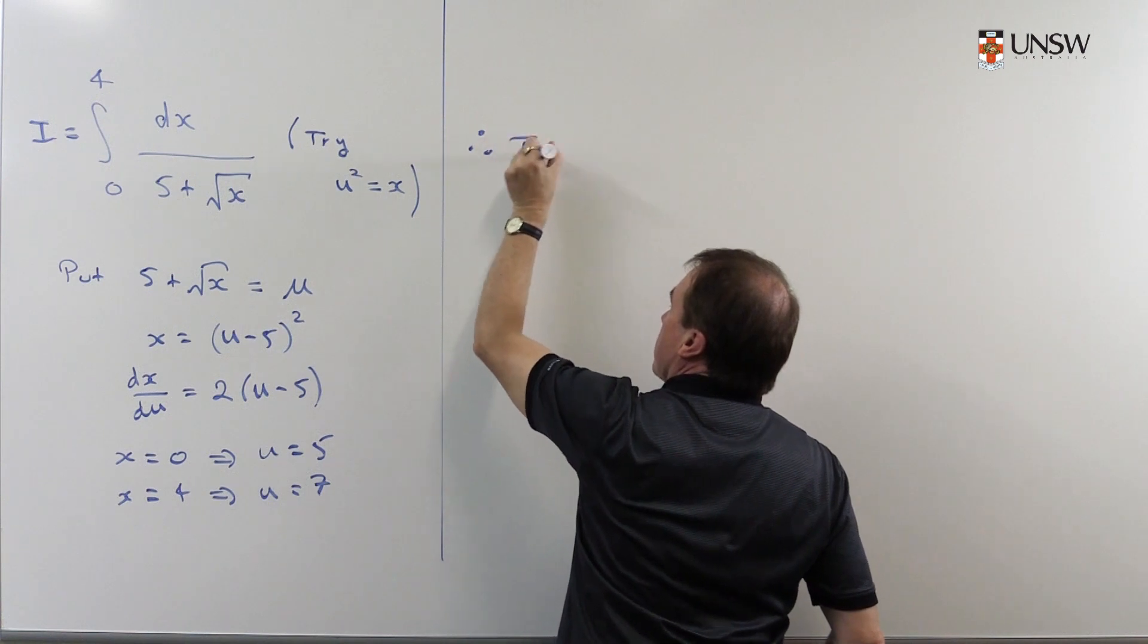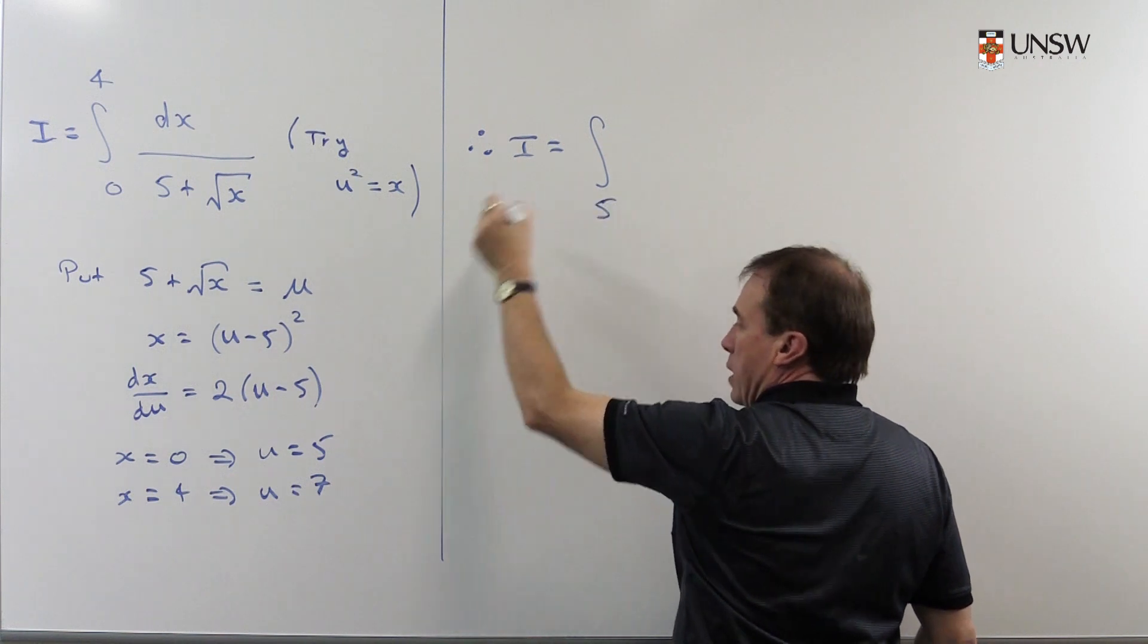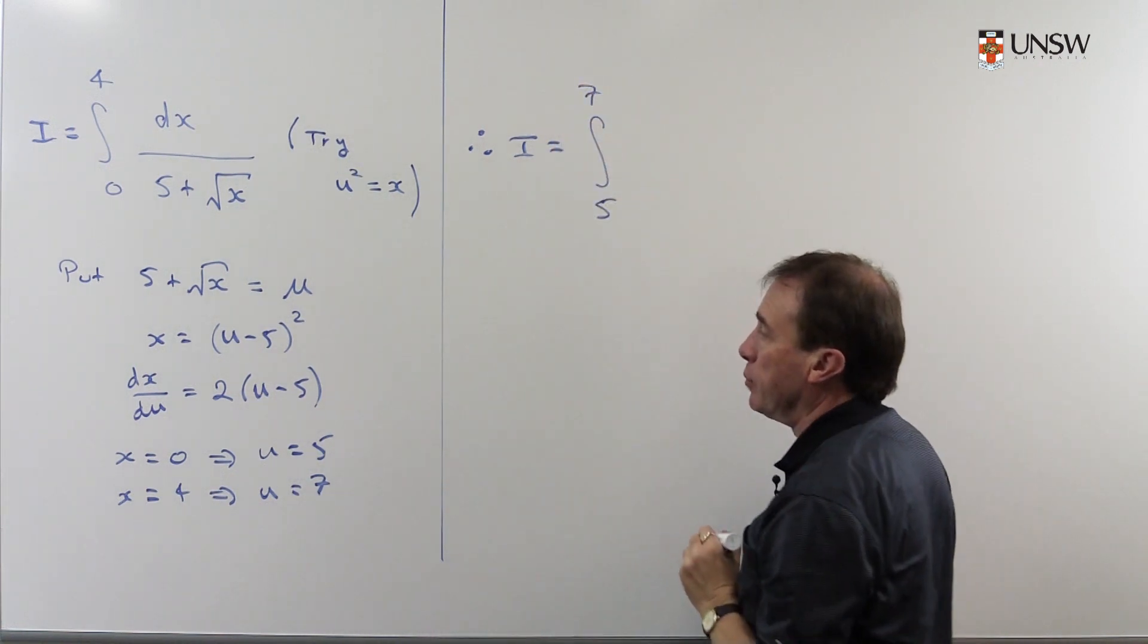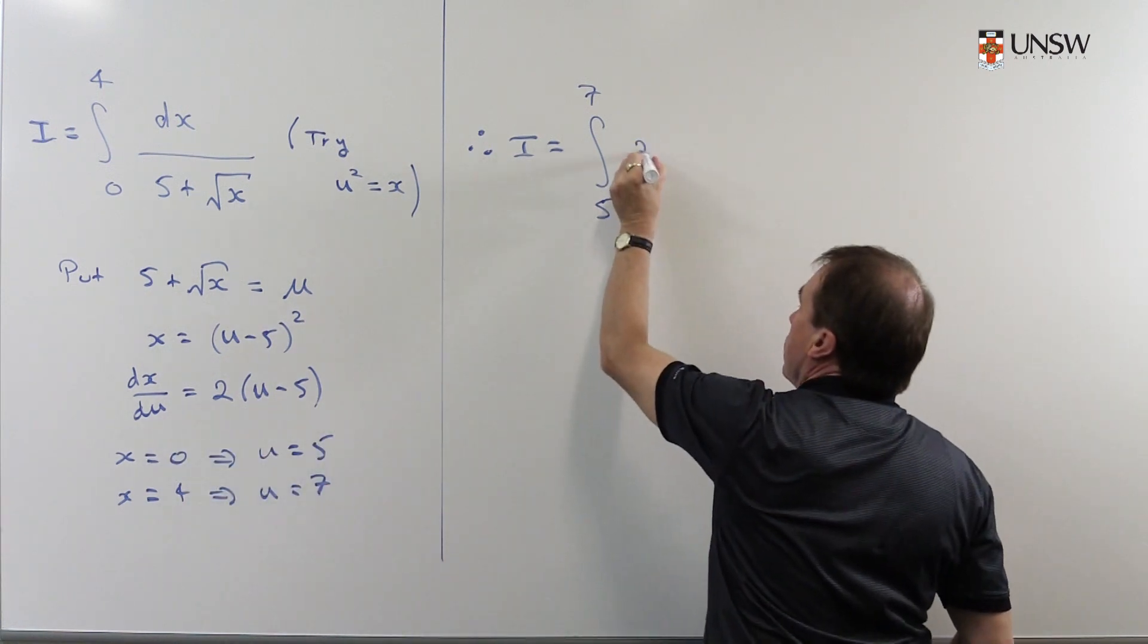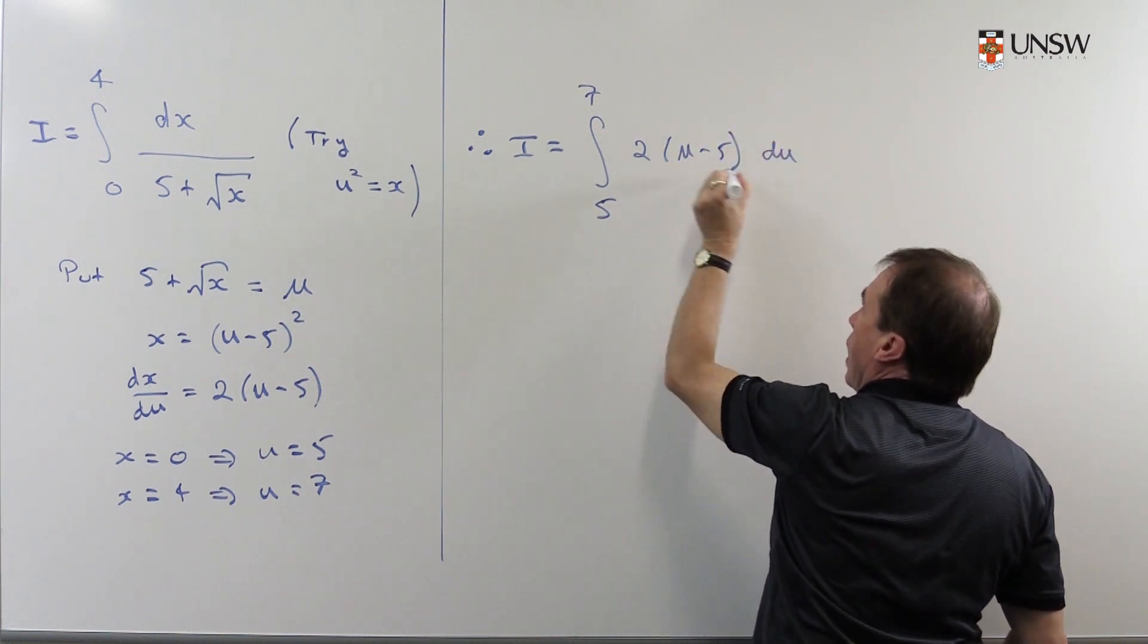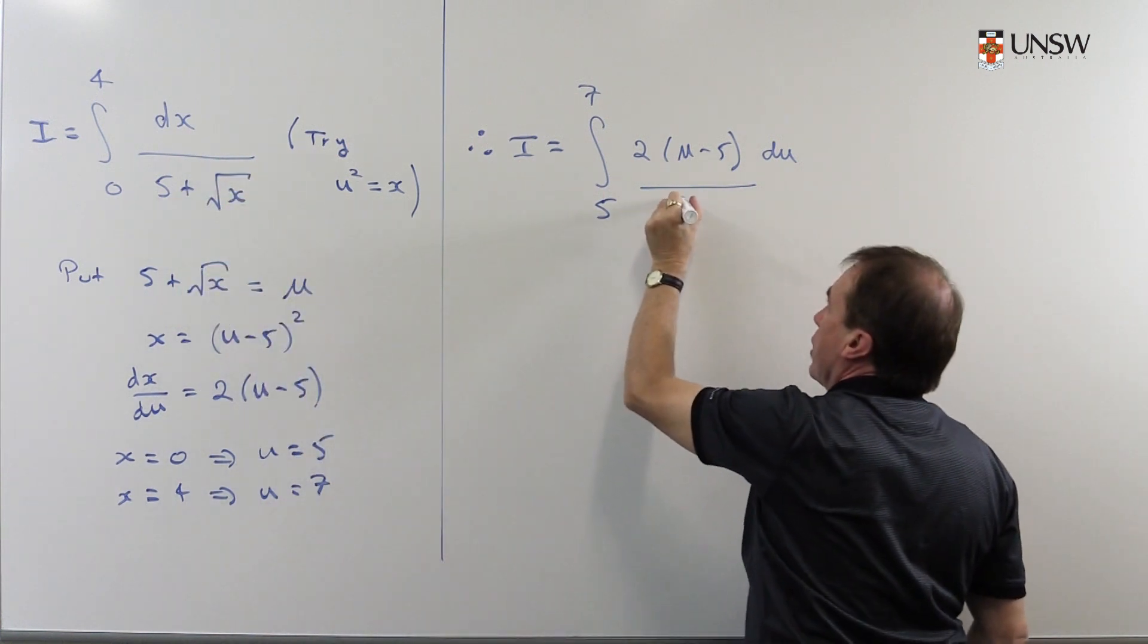So therefore this integral i now becomes the 0 turned into a 5. The 4 turns into a 7 when we change variable. The dx as I suggested becomes 2 u minus 5 du and remember the denominator I gave all of that a name. I just called that u.